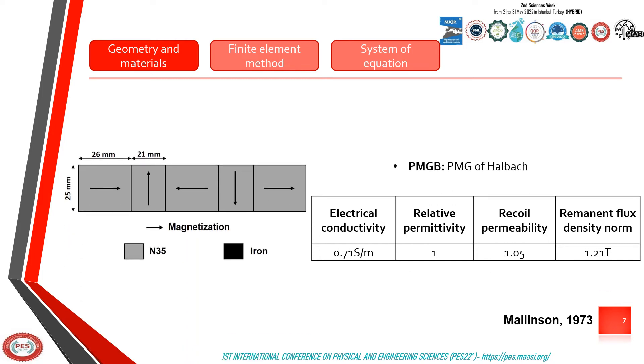PMG B is the PMG of Halbach. The Halbach arrangement is a particular combination of permanent magnets that increases the magnetic field on one side and removes almost all the magnetic field on the opposite side.